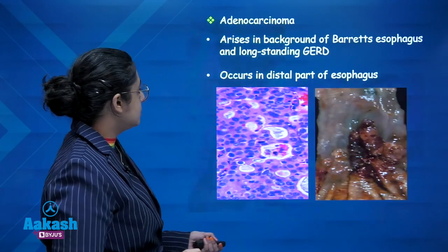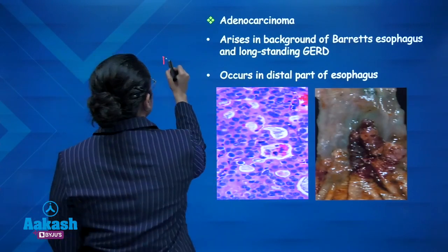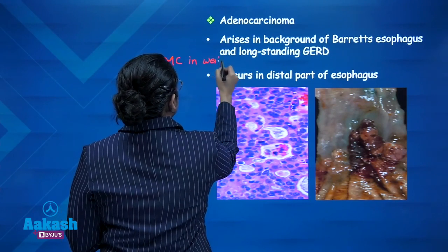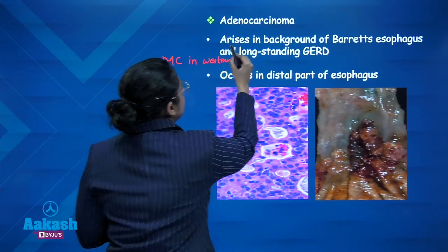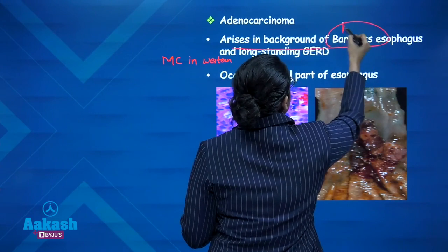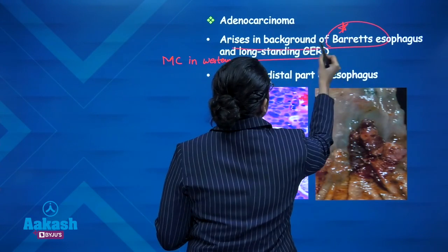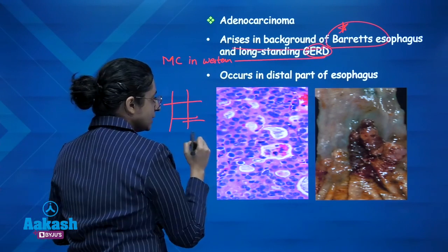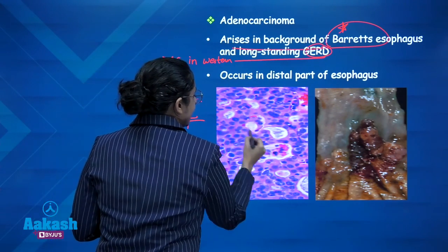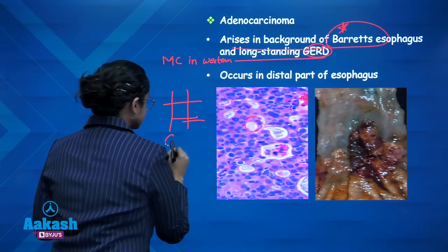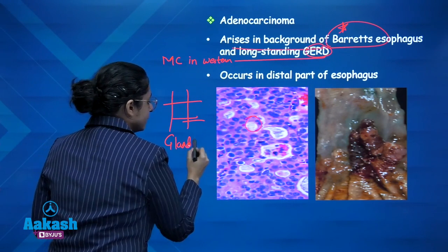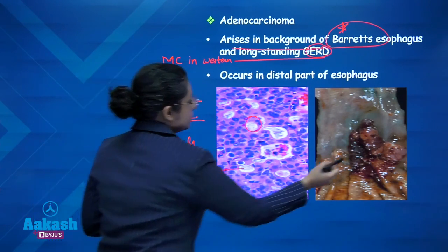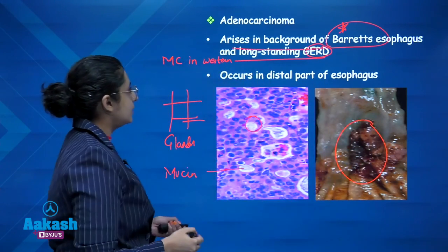Adenocarcinoma is the most common esophageal tumor in the western world. It can arise from a background of Barrett's esophagus — very important — and chronic GERD. It occurs in the lower or distal part of the esophagus and is characterized by malignant glandular cells along with the presence of mucin.